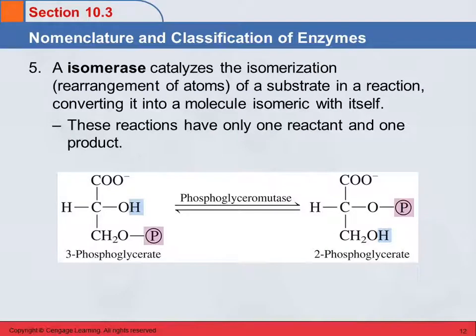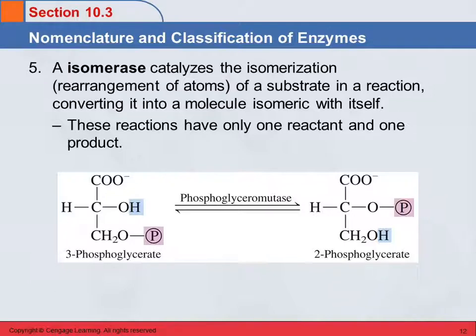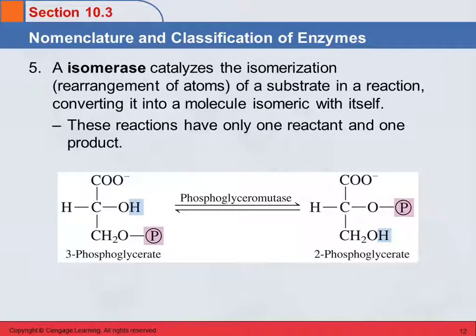Isomerases catalyze isomerization — the rearrangement of atoms within a molecule. For example, 3-phosphoglycerate can rearrange to form 2-phosphoglycerate, catalyzed by phosphoglyceromutase. A characteristic of isomerases is that they have one reactant and one product: you take one molecule and rearrange it to form an isomer.